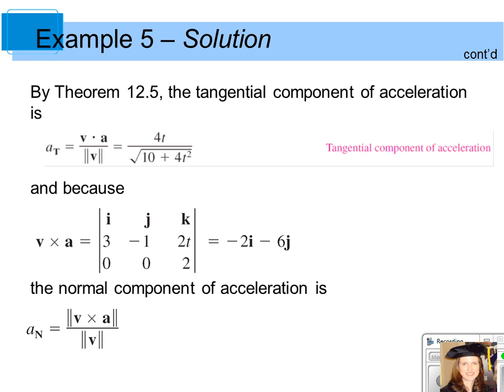By using the theorem and the formulas, we find that the tangential component of acceleration is the dot product of v and a divided by the magnitude of v. That can be simplified to 4t divided by the square root of the quantity 10 plus 4t squared.